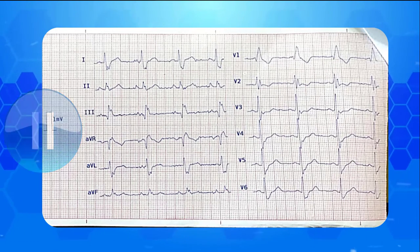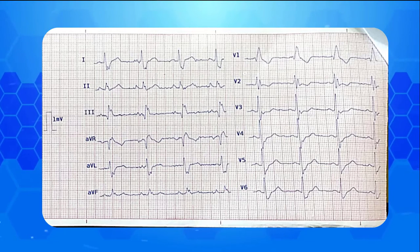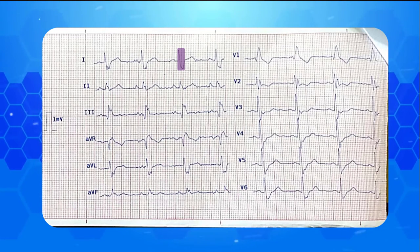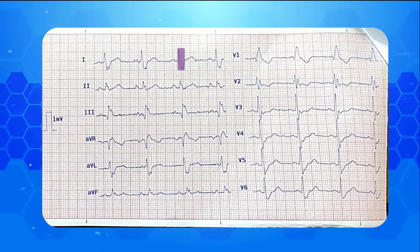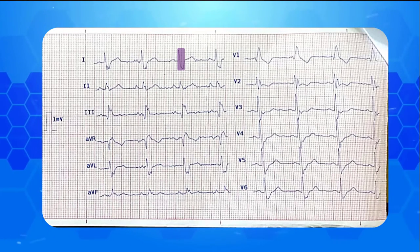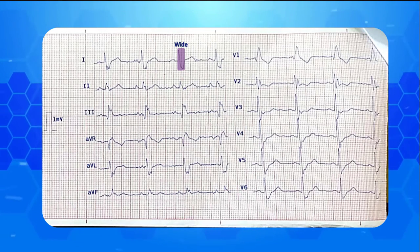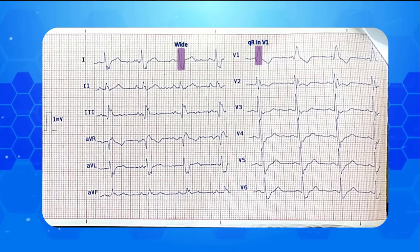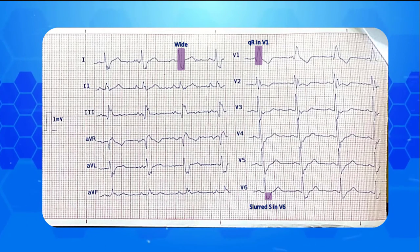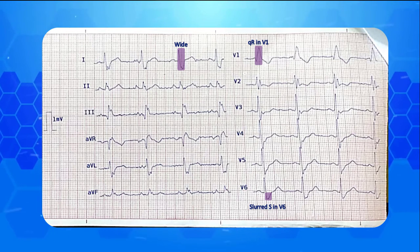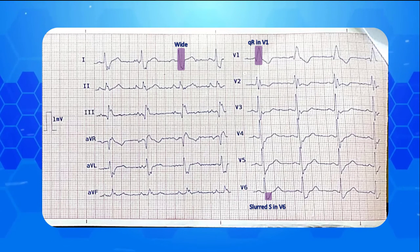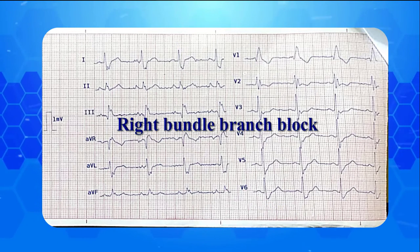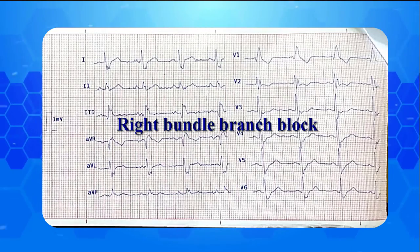As you see, the QRS complexes are 3.5 small boxes, so the complexes are wide. There is a QR pattern in V1 with concomitant slurred S in V6. Therefore, this EKG is demonstrating RBBB as well.